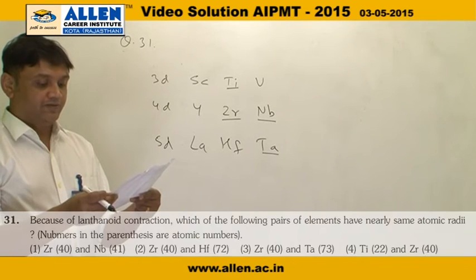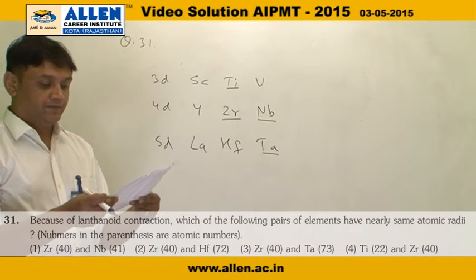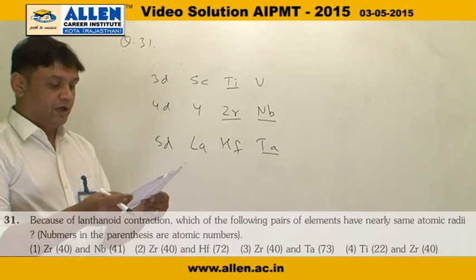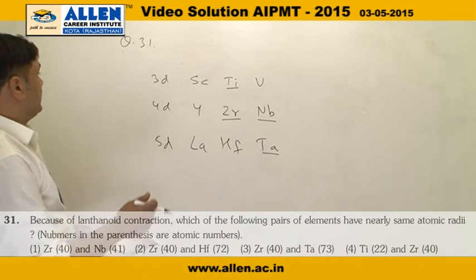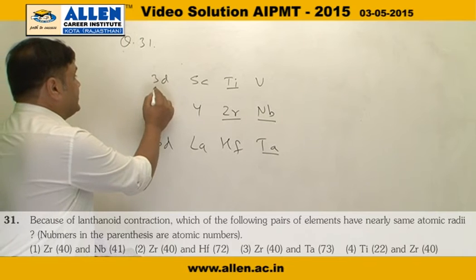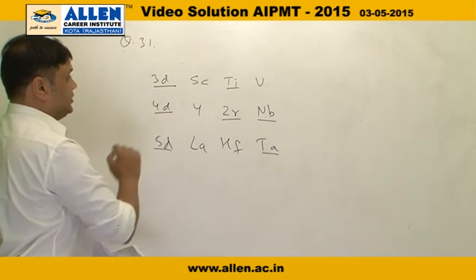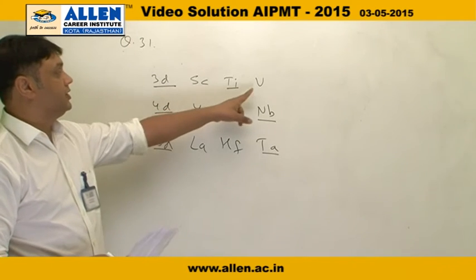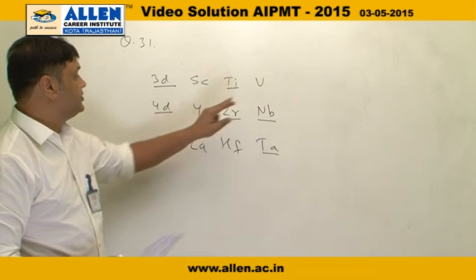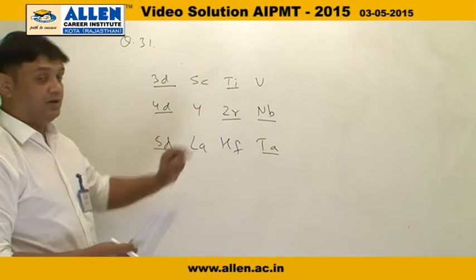Question 31: Which pairs of elements have nearly the same atomic radii? We are given atomic numbers in brackets. This is the 3d series, 4d series, and 5d series. The initial three elements of the 3d series are scandium, titanium, vanadium. Similarly, three initial members of each series are written here.